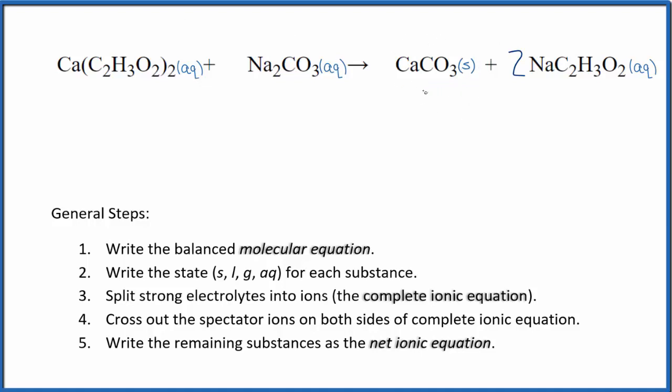When these react, this calcium carbonate - that'll be the precipitate, fall to the bottom of the test tube. Now that we have the states, we can split the strong electrolytes into ions for the complete ionic equation.